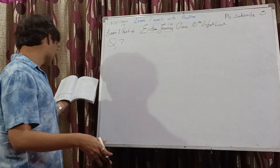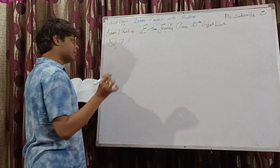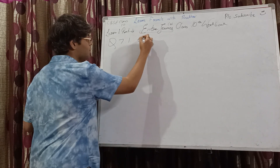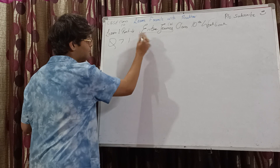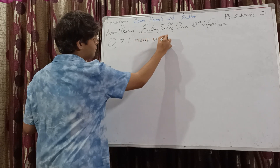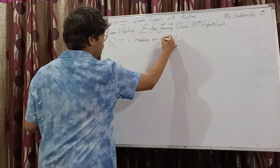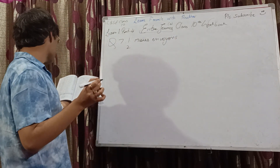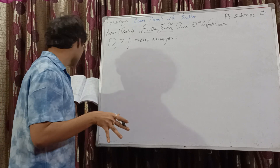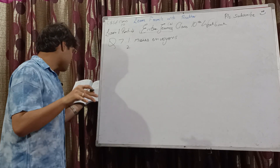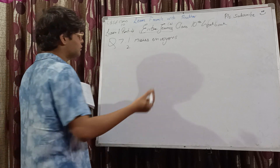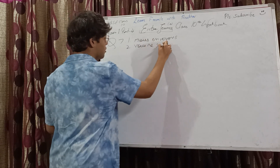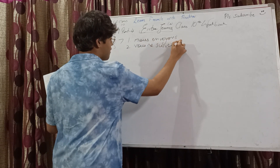First one: nous lui ___ de l'argent. The verb is envoyer (to send). We send him some money — nous lui envoyons. I'm writing the subject pronoun as well in case there's any doubt. Number 2: Pourquoi vous ne ___ pas mon exemple? Why don't you follow my example? Suivre — vous ne suivez pas.